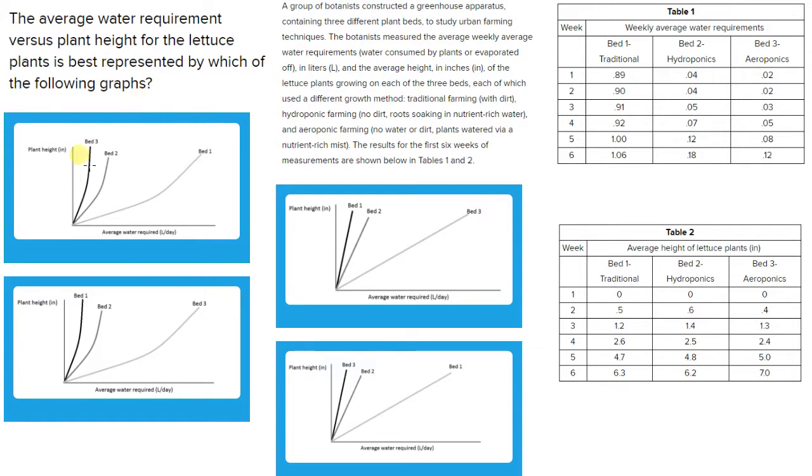So what we're going to do is go through each graph and see if what we see represented in the graph matches up with the data that we see in the tables. We see that in each of the graphs we have average water requirement on the x-axis and plant height on the y-axis. So the farther that we go on this x-axis, the more water is required by that plant. And the higher up we go on the y-axis, the higher the plant's height was on average.